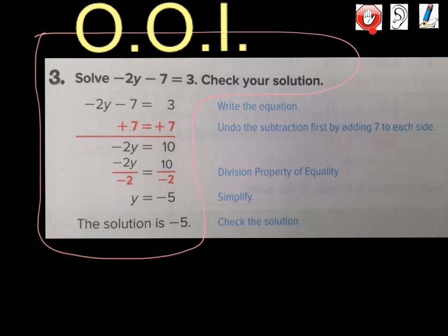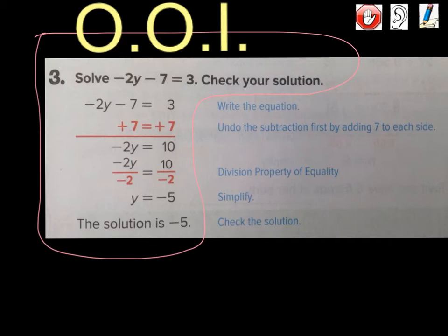Write down what's inside the pink circle in your notes — a full problem solved. We have negative 2y minus 7 equals 3. The furthest part from our variable is the straggler, so we eliminate the negative 7 first by adding 7 — the opposite of subtraction — and we add 7 to both sides. Now we're left with negative 2y equals 10. We need to eliminate that negative 2, so we divide by negative 2 on both sides: negative 2y divided by negative 2 equals 10 divided by negative 2. The negative 2s cancel out, leaving y equals negative 5.